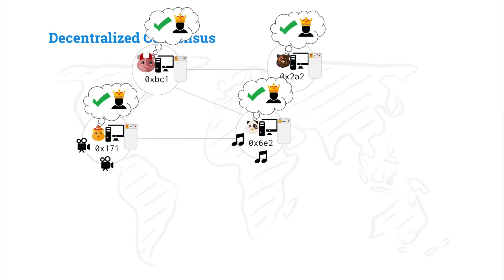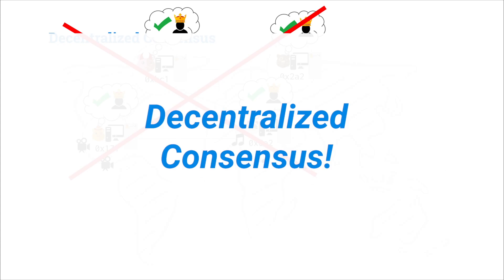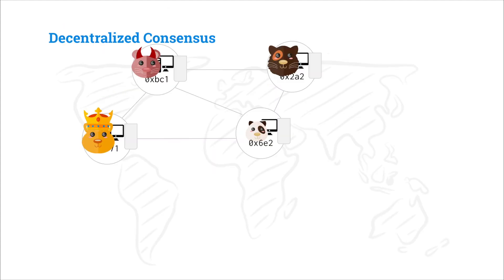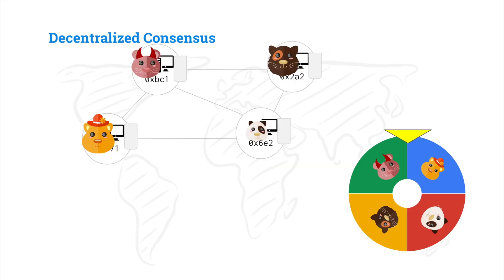At the end of chapter 2, we had this proof of authority network, and the big idea behind decentralized consensus is rather than having a single authority node tell everyone what transaction they should include next, we have rounds, and people can take turns in each round being this authority node. We can represent this idea as having everyone having an equal chance of getting picked by a spinner, and whoever gets picked is a one-time authority node who gets to propose the next state transition everyone should apply to their state.